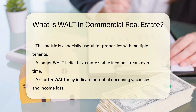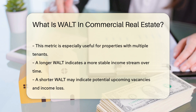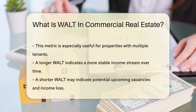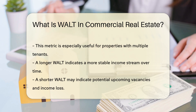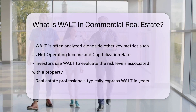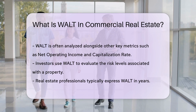It takes into account the duration of each lease and the amount of space each tenant occupies. This metric is particularly useful for properties with multiple tenants. A longer WALT indicates a steady income stream over time. Conversely, a shorter WALT may signal upcoming vacancies and potential income loss.